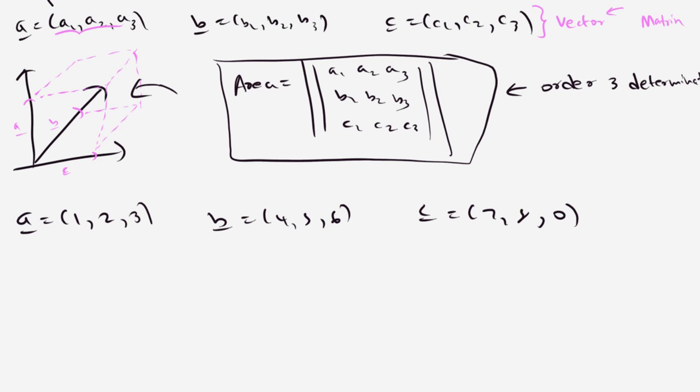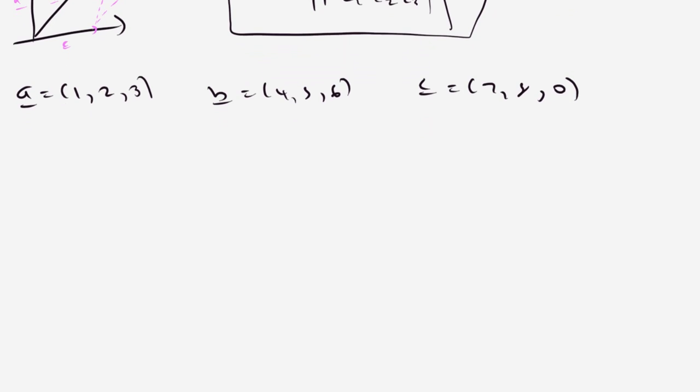So if you wanted to find out the area of the parallelepiped formed by these three vectors, all we have to do is put it into a determinant form.